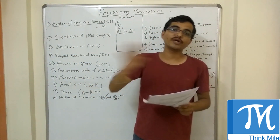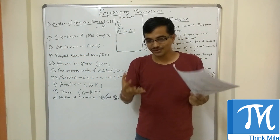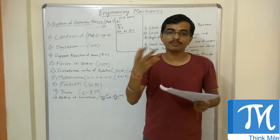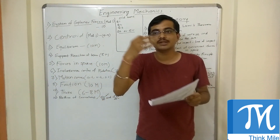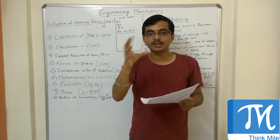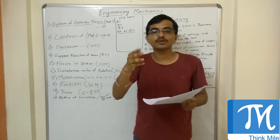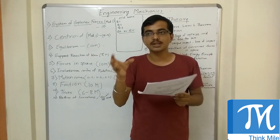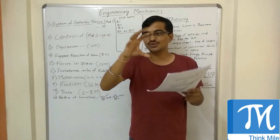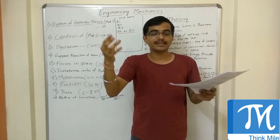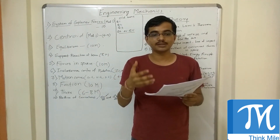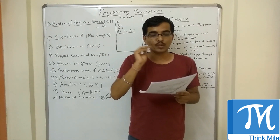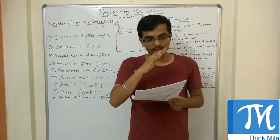Next is equilibrium — again a very important chapter. In coplanar forces you were finding sigma fx, sigma fy, and the resultant. In equilibrium, you will be finding sigma fx equal to zero and sigma fy equal to zero, because it is an equilibrium condition, and then you might be told to find some of the unknown forces. There might be two circles, like two spheres, kept one above another and you will be told it is in equilibrium — find the forces. In this type of diagram, you have to find the angle theta first.